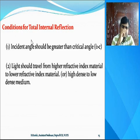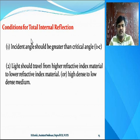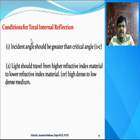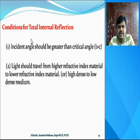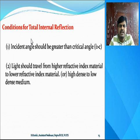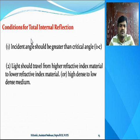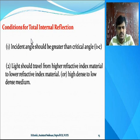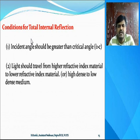There are two conditions for obtaining total internal reflection in an optical fiber. First, the angle of incidence should always be greater than the critical angle. Second, light should travel from a higher refractive index material to a lower refractive index material, i.e., from higher density medium to lower density medium. These two conditions must be followed in optical communication to transmit light inside the core without refraction into the cladding.